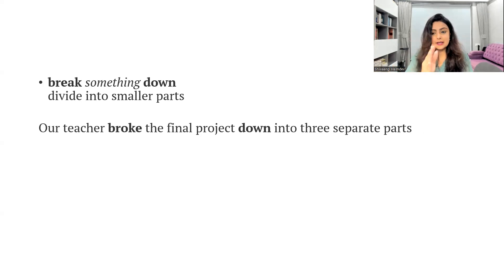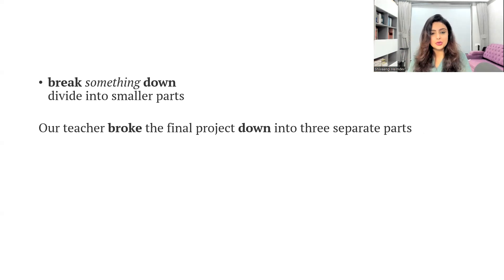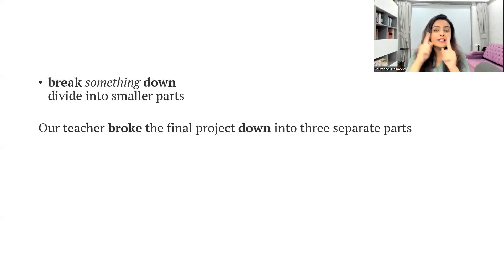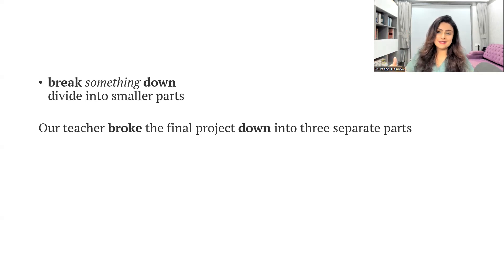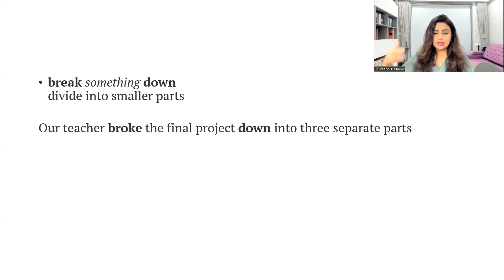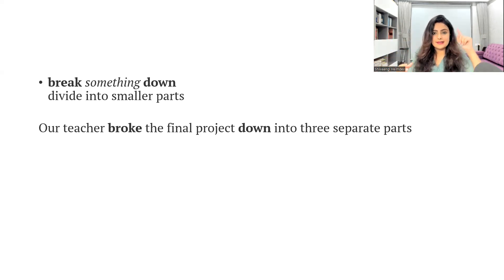'Break something down' — here something is placed between the verb and preposition; it could be a project, a report, or any task. When you break something down, you divide it into smaller parts. Look at the sentence: 'Our teacher broke the final project into three separate parts' — for example, an introduction, a problem statement, and a conclusion. The entire project is broken down into three parts.